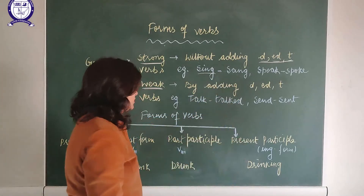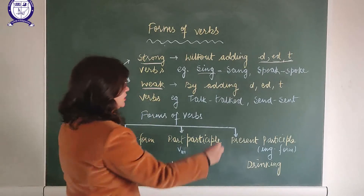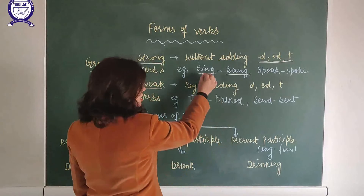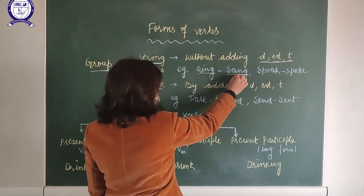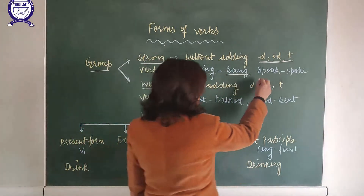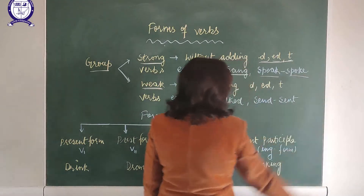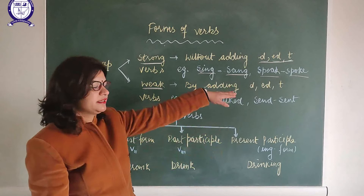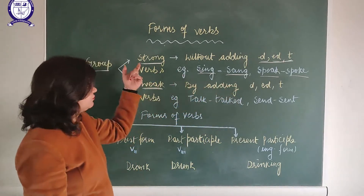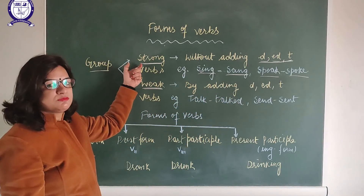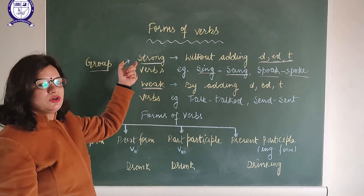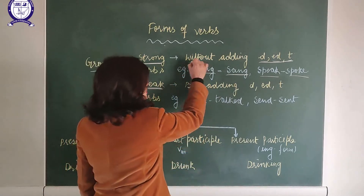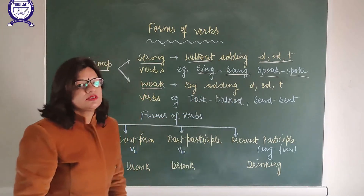For example, 'sing.' If you are supposed to make the past participle of this verb, the past forms are made by changing the vowel — we change the vowel by A. In the same way, 'speak' — we make the past participles by changing the vowel letters of the word. So these verbs are known as strong verbs because their past forms are made without adding D, ED, or T.